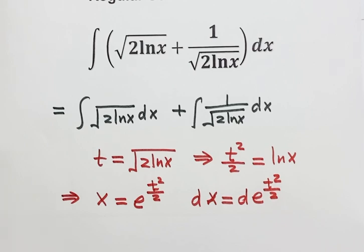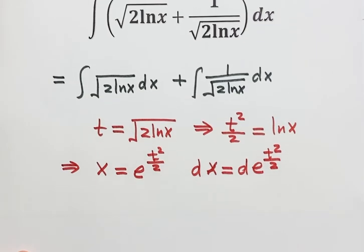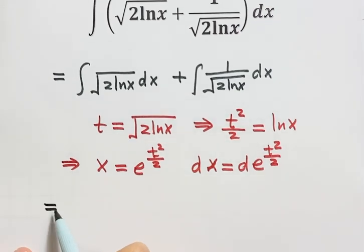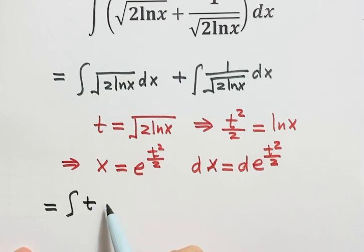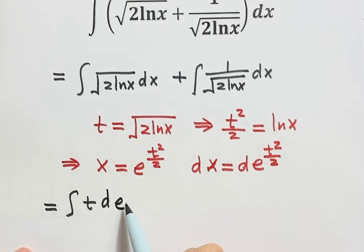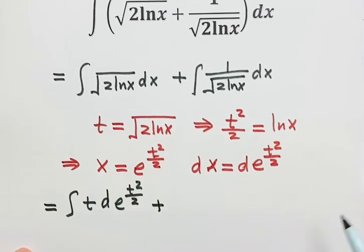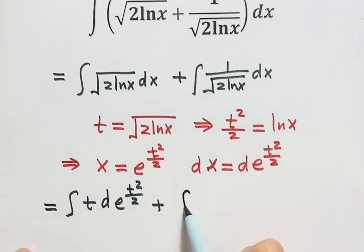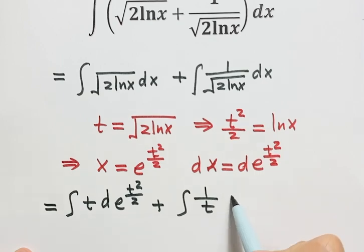So now we can do the substitution for the first part. The first integral becomes t times d of e to the power t squared over 2. The second term becomes 1 over t times dx, which is d of e to the power t squared over 2.